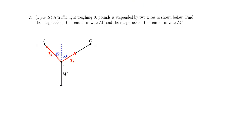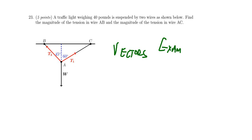Question number twenty-three will be a story problem involving vectors — things like static equilibrium, headings, airspeed versus ground speed. You can solve it geometrically using triangle methods, which may require the law of sines and cosines, or completely algebraically by converting all vectors to component form to avoid those issues. Question twenty-three will be a story problem involving vectors, just like question fourteen from exam three.